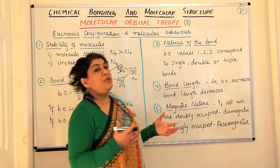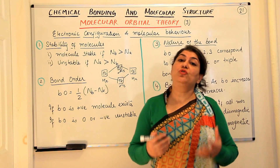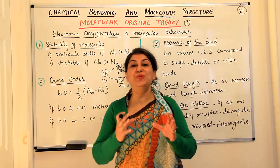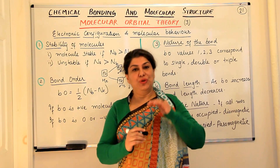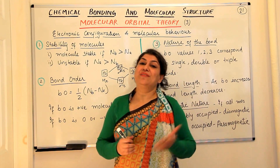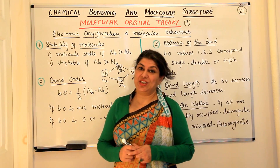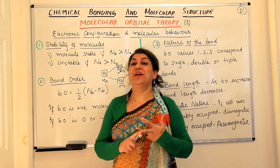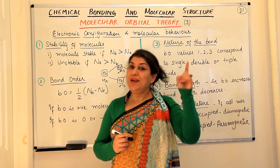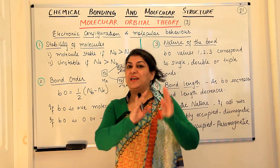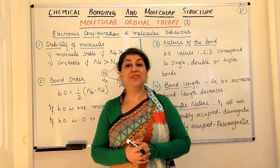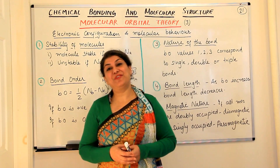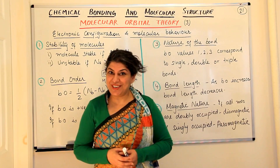So these were the properties and behavior of molecules based on their electronic configuration. In the next video, we will study how to write the electronic configuration — the energy levels and how to fill electrons into them following the three rules: the Aufbau principle, Hund's rule of maximum multiplicity, and the Pauli exclusion principle. If you found this video helpful, please give it a thumbs up, subscribe to my channel, recommend it to your friends, and keep returning for more chemistry videos. Thank you for watching, bye-bye for now.